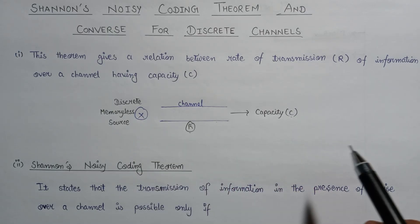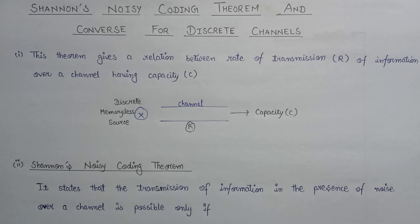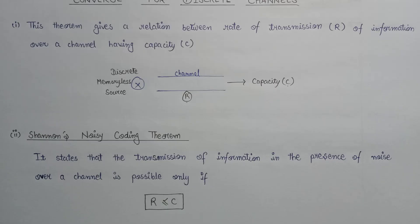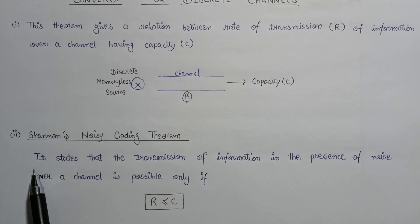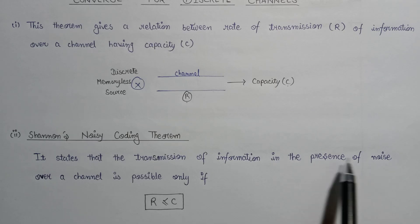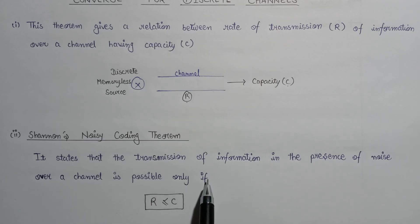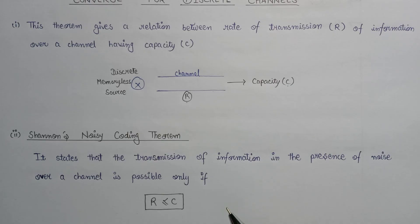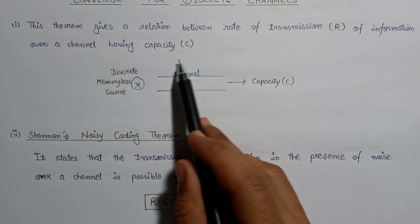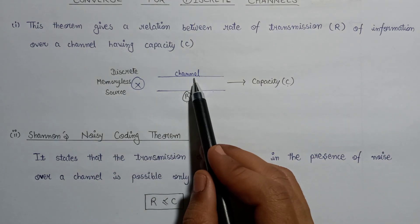Here is the statement of Shannon's Noisy Coding Theorem: it states that the transmission of information in the presence of noise over a channel is possible if and only if the rate of transmission of information is less than or equal to the capacity of the channel over which the information is transmitted.